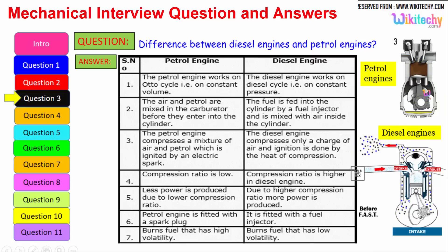Here the compression ratio is low whereas the compression ratio is higher. Less power is produced due to lower compression ratio. Higher compression ratio means more power is produced. Petrol engine is fitted with a spark plug. It is fitted with a fuel injector. So it burns the fuel with high volatility. The petrol is highly volatile, whereas here it will burn the low volatility liquid also. Diesel is a low volatile liquid. These are some of the differences between the petrol engine and diesel engine.